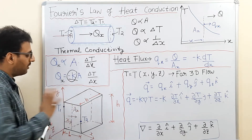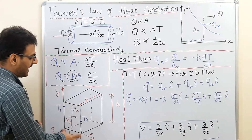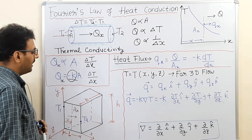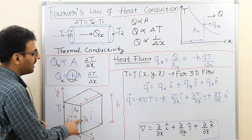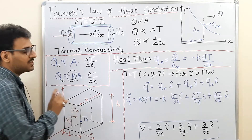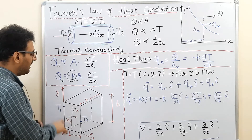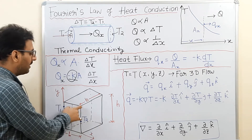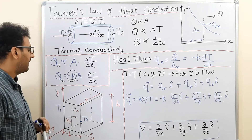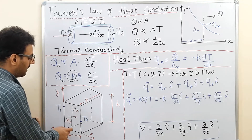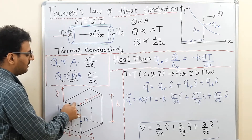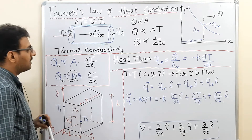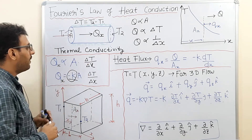Now consider a rectangular block with thickness L, height H, and width B. Suppose there is a temperature difference between the inner face at T1 and the outer face at T2 along the thickness. The cross-sectional area of this plane block is A_x. At a distance x, the heat flow rate is given by q = k A (dT/dx).